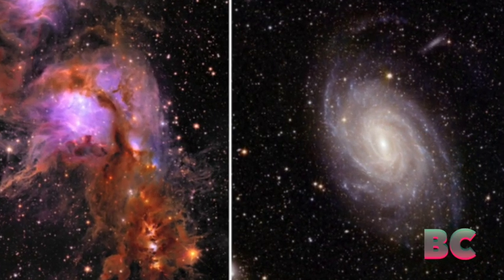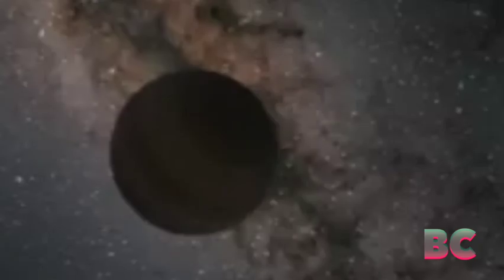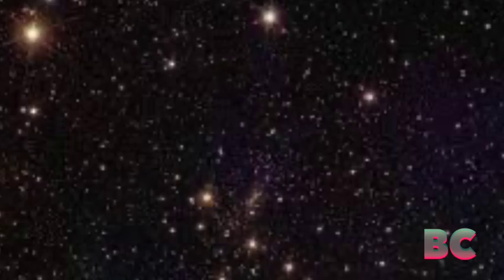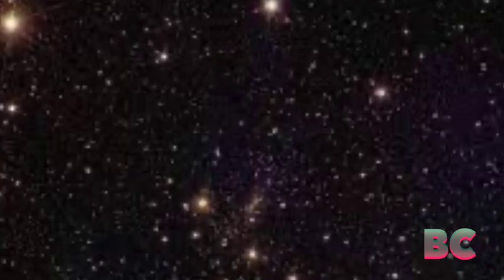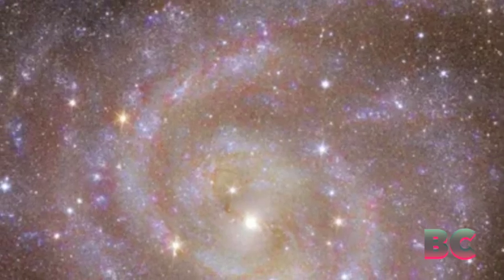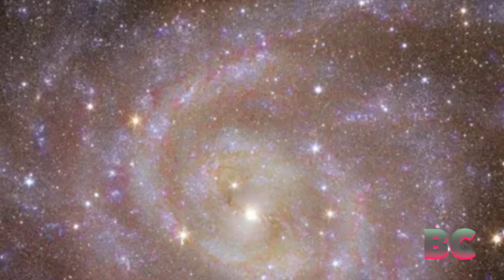Euclid's primary objective is to construct a comprehensive 3D map of the universe during its six-year mission, shedding light on the mysterious 95% comprised of dark matter and dark energy, the Guardian has reported.